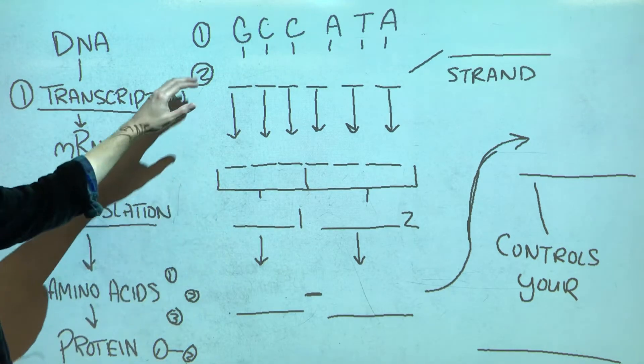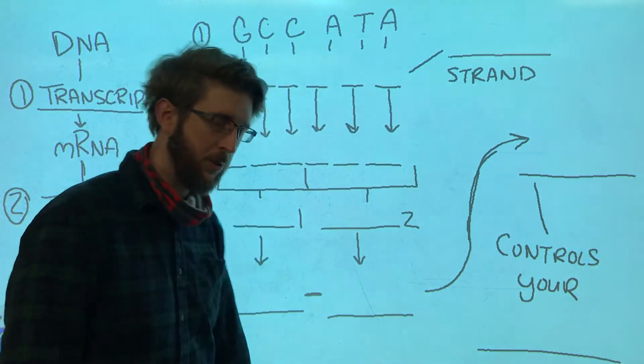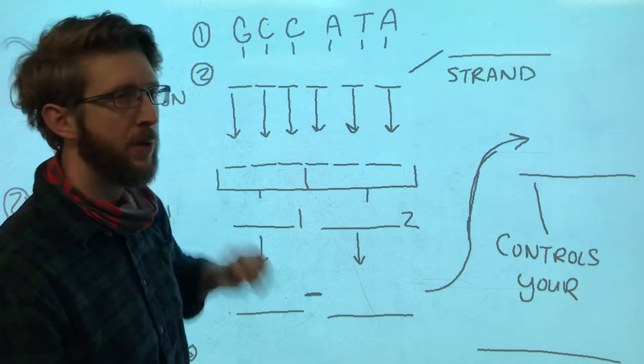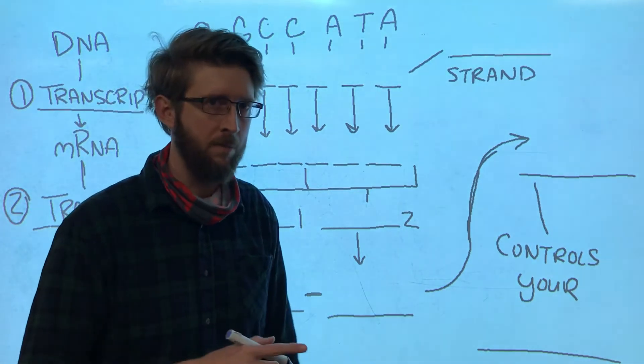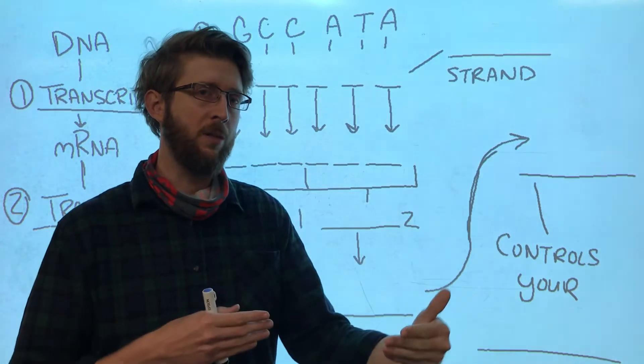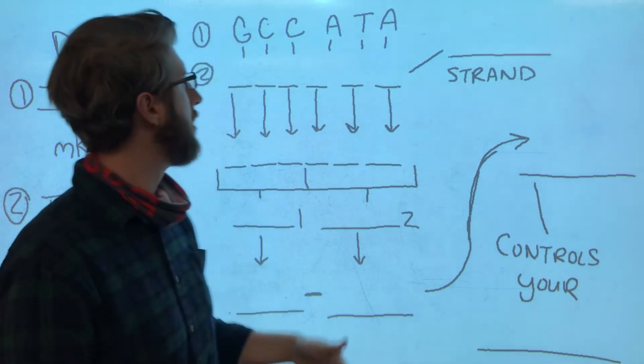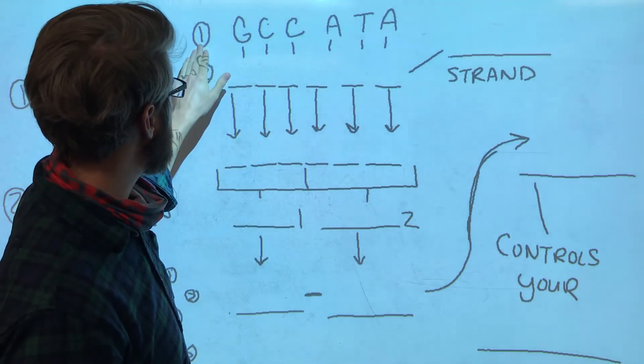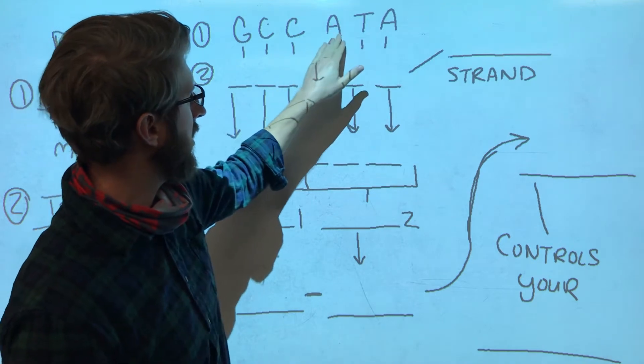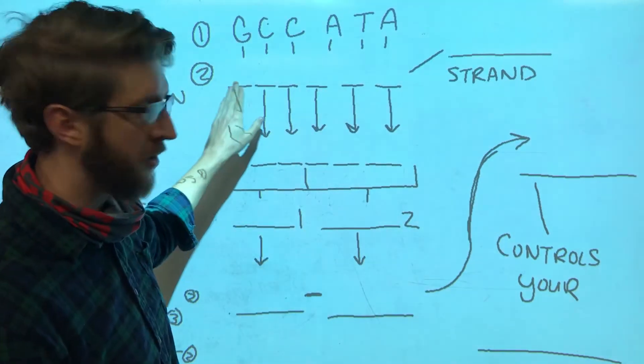Okay, so we're going to start here. Before we do transcription, I just want to go over the base pairing rules one more time. Remember that DNA is what we're starting with, but it has two strands, not just one. So let's say that strand number one of DNA reads GCCATA. Well, there's a second strand across from that.